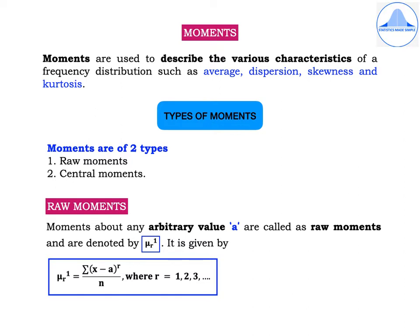I will first explain raw moments. Moments about any arbitrary value 'a' are called raw moments and are denoted by μr'. The formula is μr' = Σ(x − a)^r / n, where r takes the values 1, 2, 3, and so on.